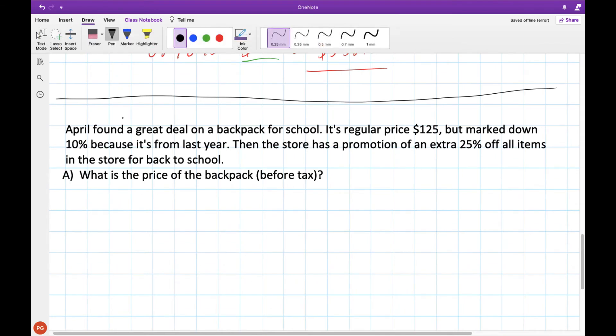All right, here's our next question. April found a great deal on a backpack for back to school. It's $125 regular price, but marked down 10% because it was from last year. And then the store has a promotion for an extra 25% off all the items in the store for back to school. What's the price of the backpack before tax? Now, you might be thinking, oh, I'll just do 10% plus 25%. But remember, this 10% gets taken off first, and then an extra 25% afterwards.